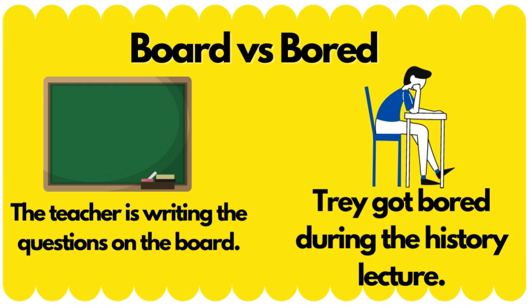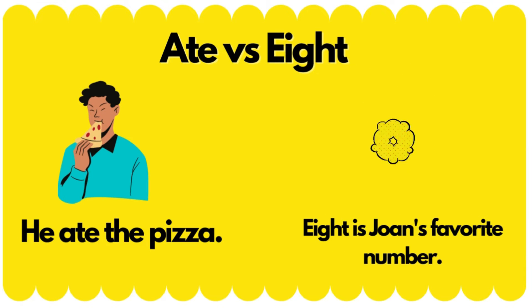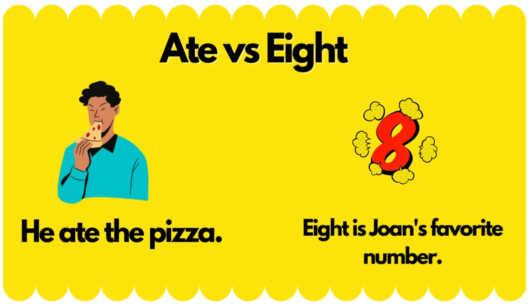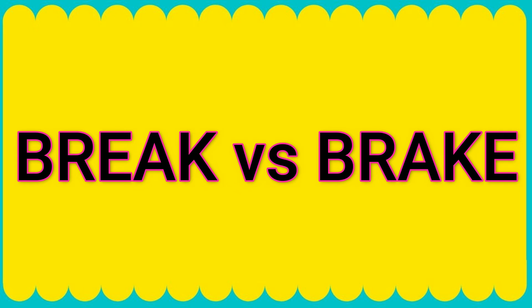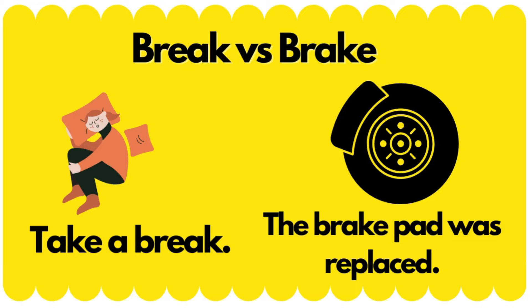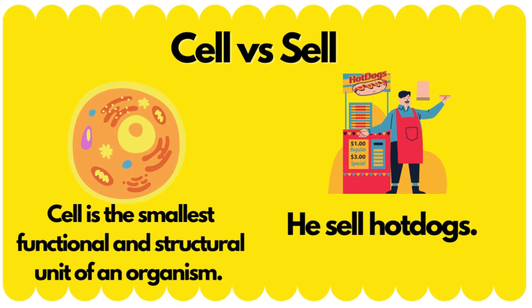Trey got bored during the history lecture. Ate versus eight: he ate the pizza; eight is Joan's favorite number. Break versus brake: take a break; the brake pad was replaced.